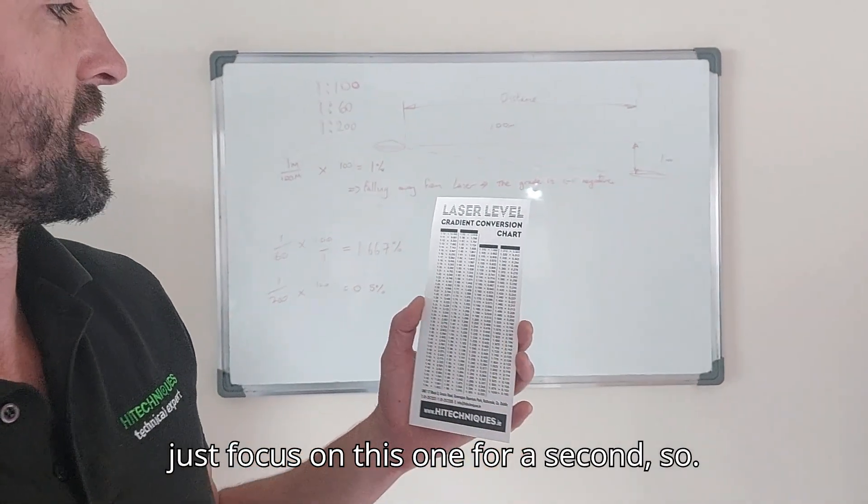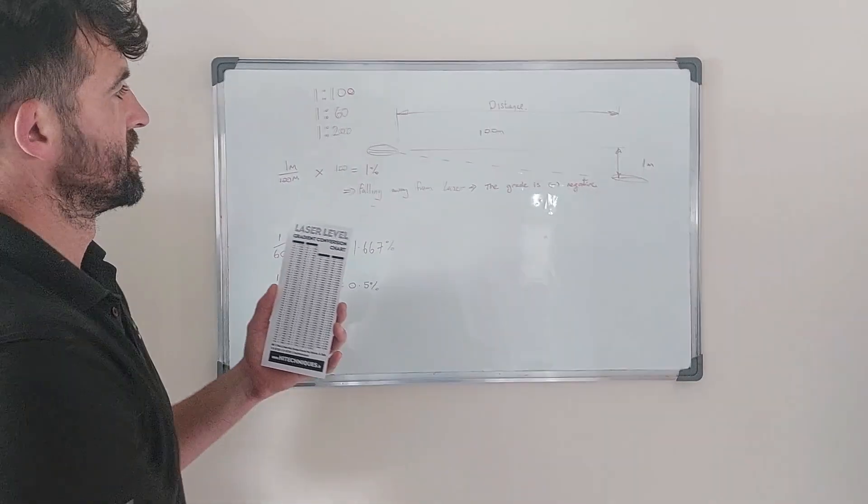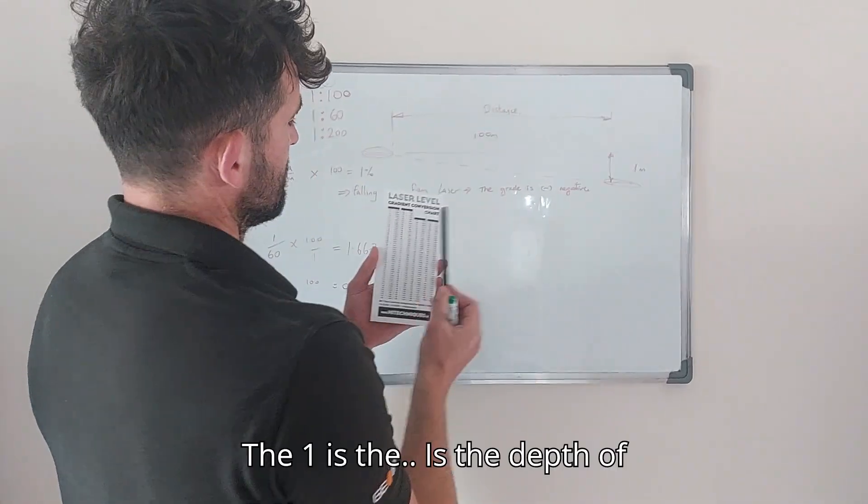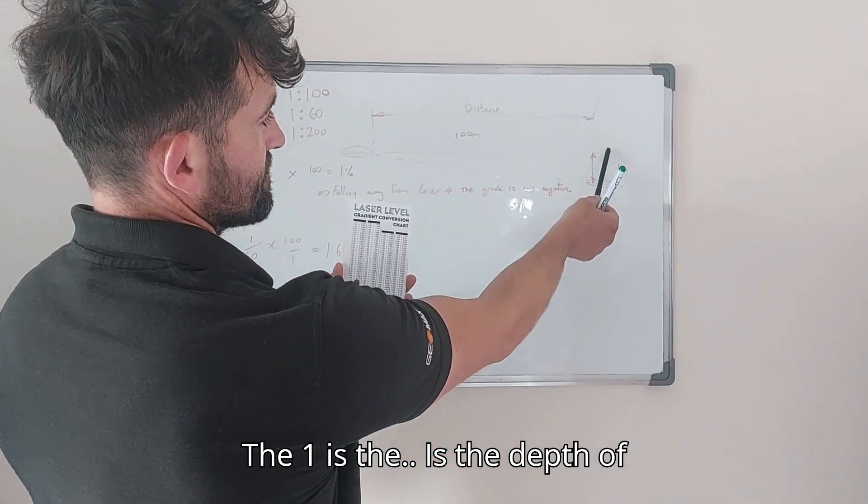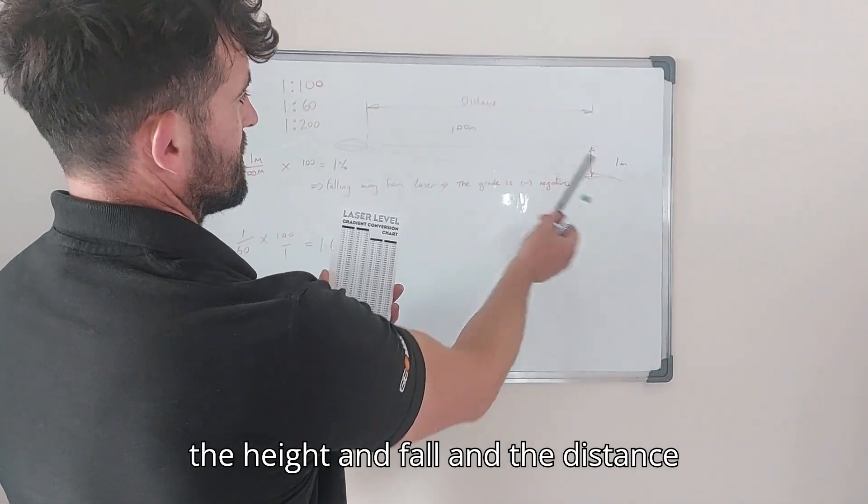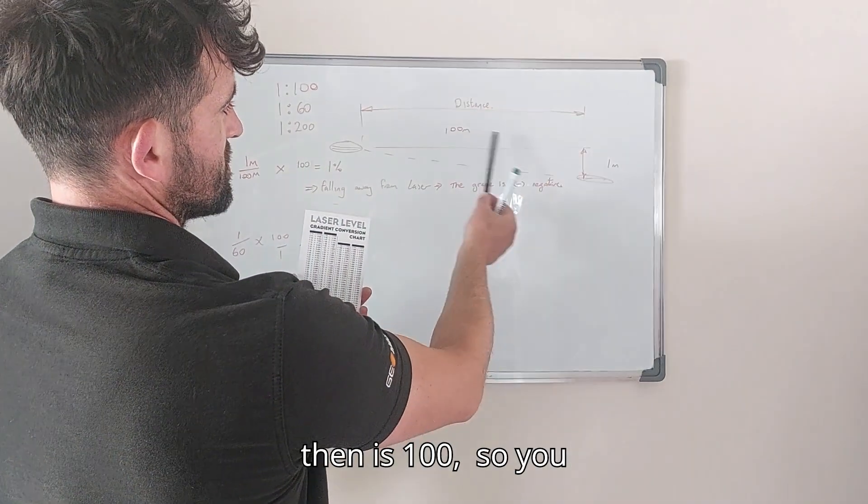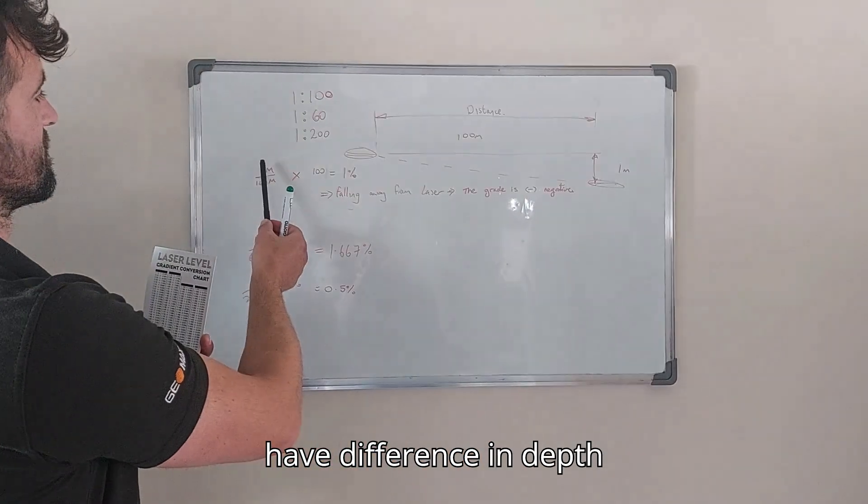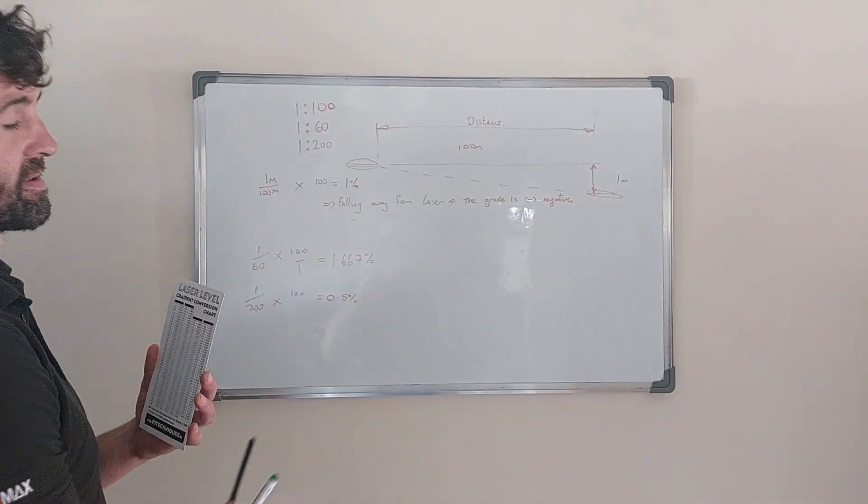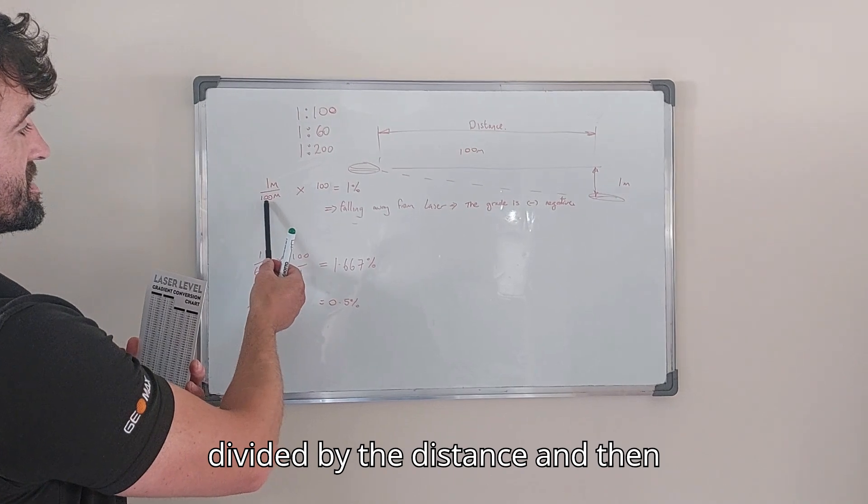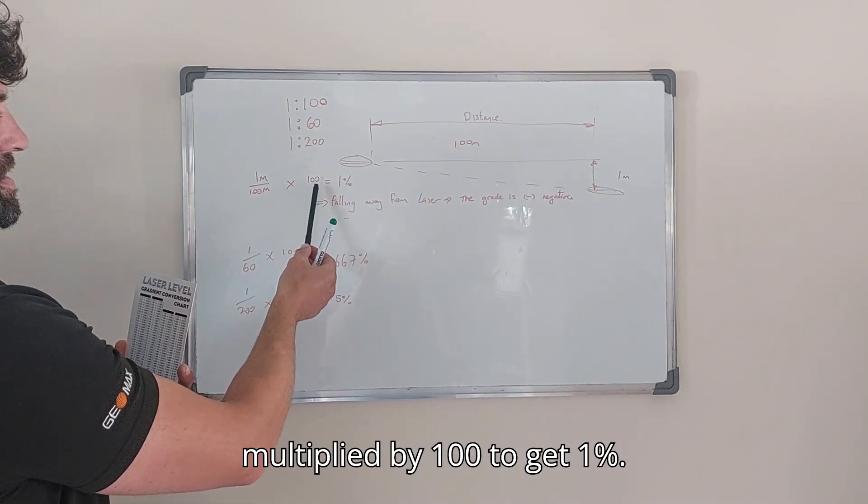Just focus on this one for a second. The 1 is the depth of the height you fall and the distance then is 100. So you have the difference in depth divided by the distance and then multiplied by 100 to get it to 1%.